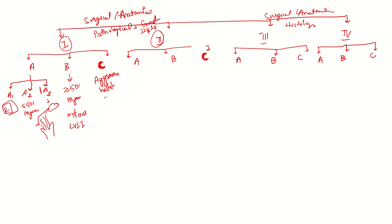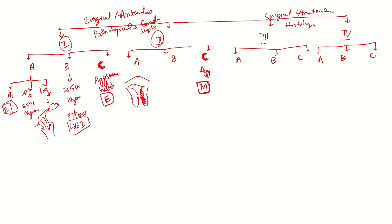Stage 2C is aggressive histology with tumor extending to any depth of myometrium. Stage 2A is the tumor extending into the cervical stroma. Stage 2B involves the presence of substantial LVSI. In stages 1 and 2, 'A' and 'B' substages are low-grade endometrial tumors, whereas 'C' substages are aggressive histology tumors — serous, clear cell, carcinosarcoma, and other variants.